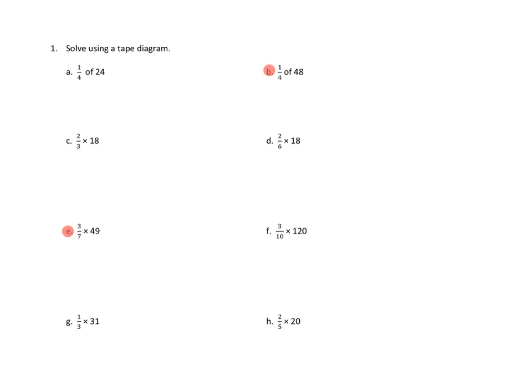Let's take a look at problem number one. Directions are super simple. Solve using a tape diagram, and we're going to take a look at 1B and 1E. So let's take a look at 1B. We've got one-fourth of 48. I'm going to go ahead and do a diagram of 48.